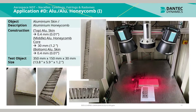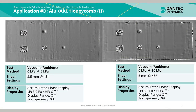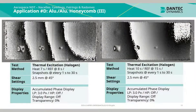This is an application of an aluminium skin and aluminium honeycomb component. The test object size was 350mm by 150mm by 30mm in thickness. This component was inspected using both vacuum ambient and thermal excitation. Using two different shoe settings of 2.5mm and 5mm, the difference in the number and density of fringes is noticeable. Individual cell cores are visible in both cases, indicating 8 major defects. The results using thermal excitation were not as prominent as those obtained using vacuum ambient excitation, though multiple defects remain detectable.